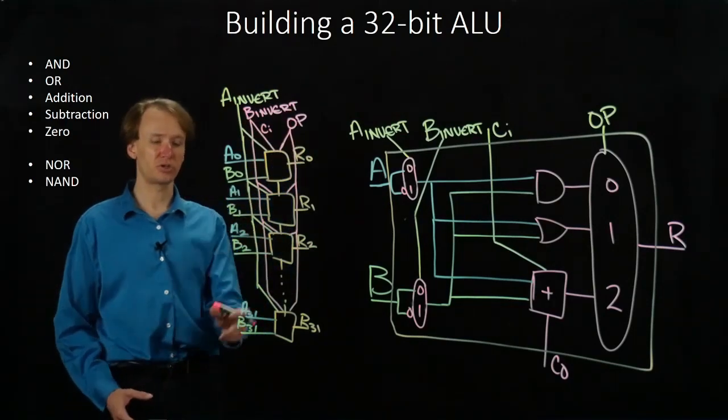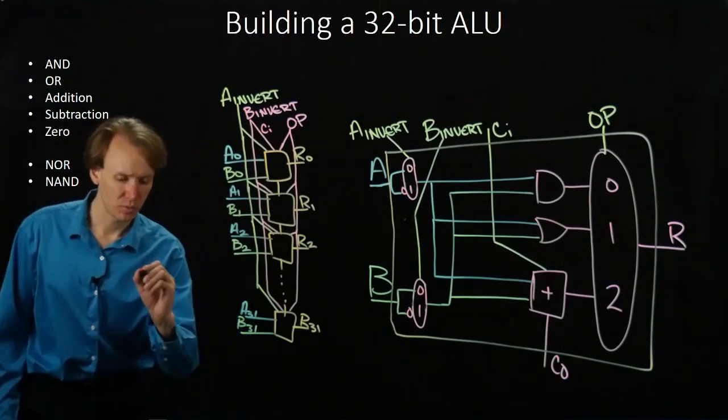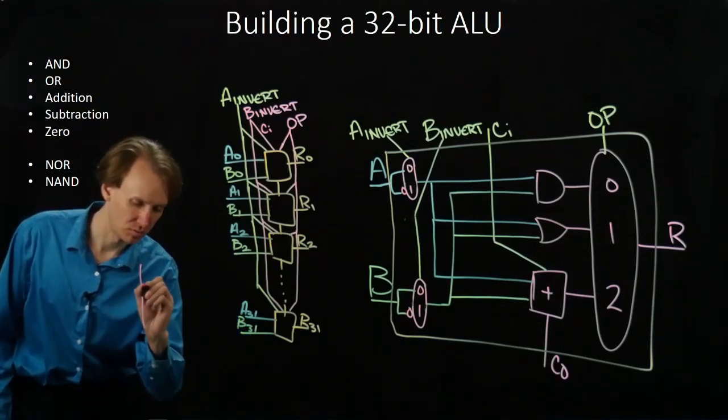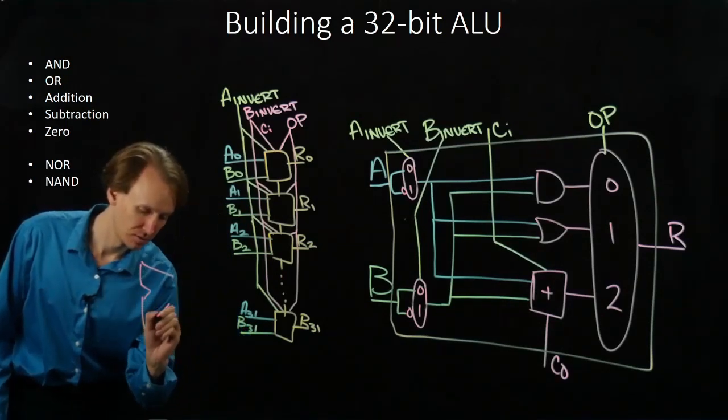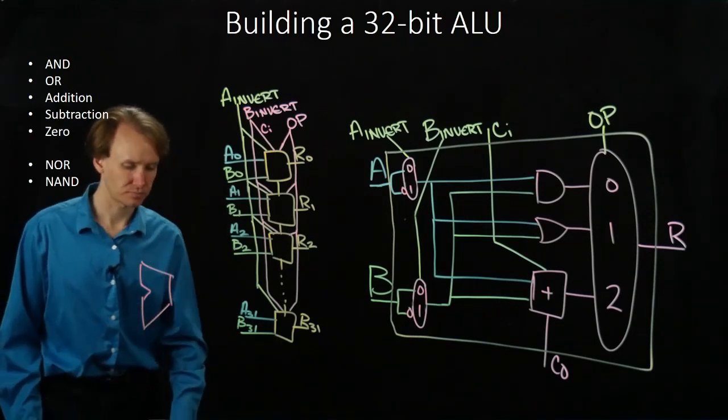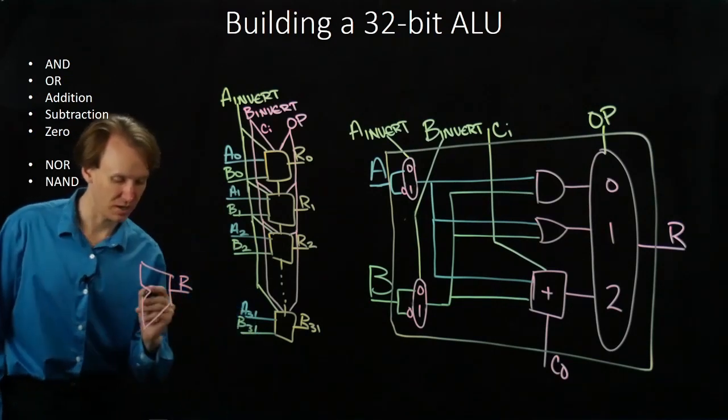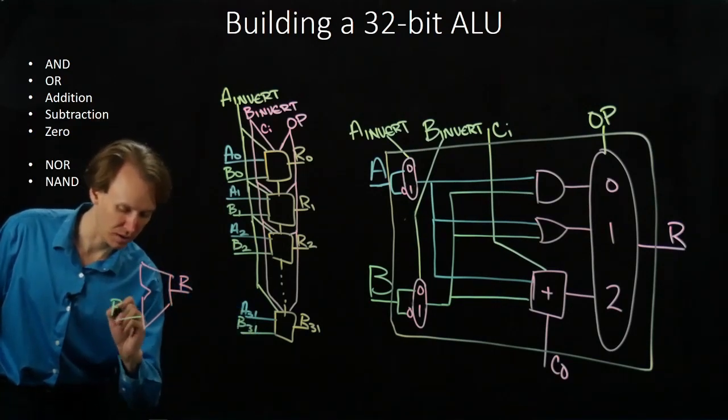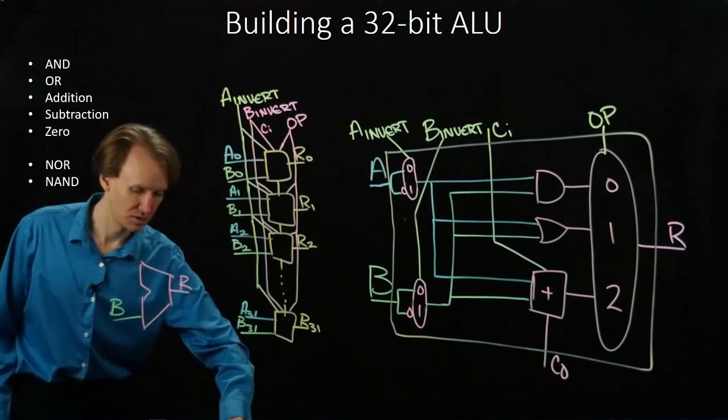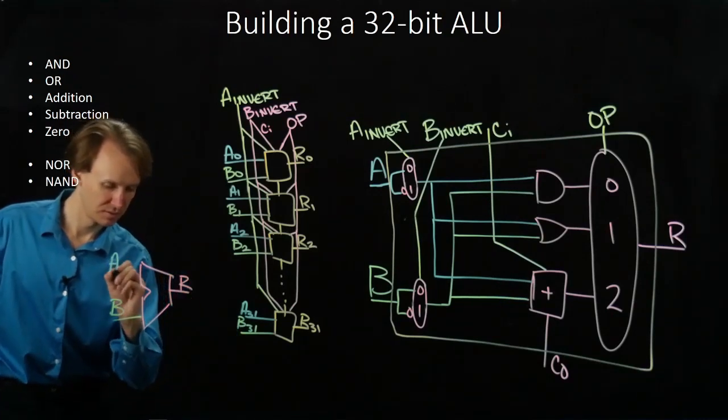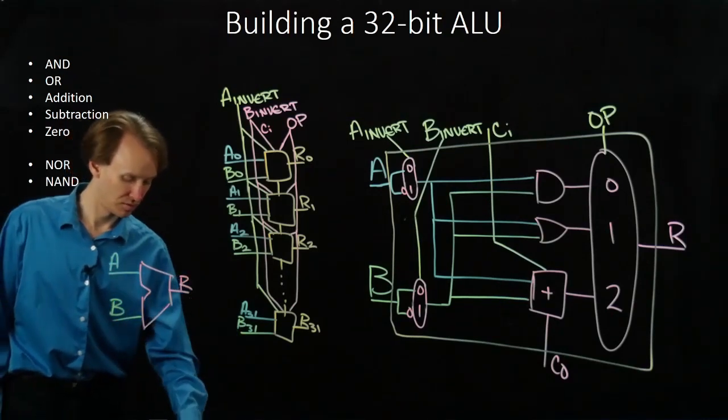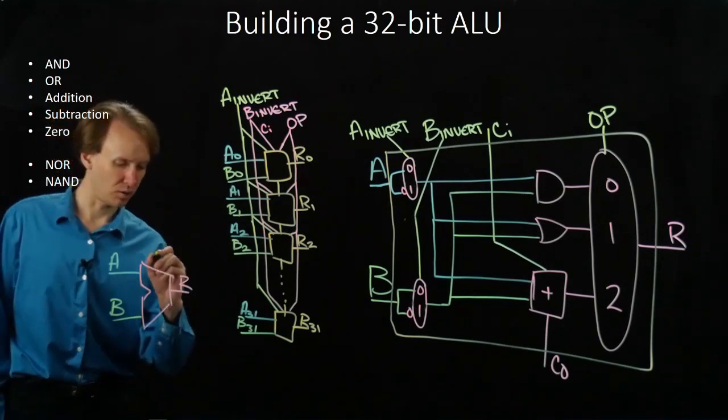When we use one of these multi-bit ALUs later, we will be using this symbol. We will still have our A and B for inputs, as well as our opcode.